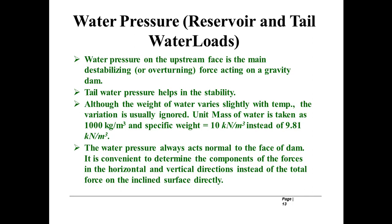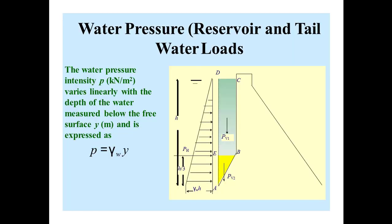The water pressure always acts normal to the surface of the dam, meaning perpendicular to the dam. It is convenient to determine the components of forces in the horizontal and vertical directions instead of the total force on the inclined surface directly. The pressure intensity V varies linearly with the depth of water measured below the free surface y, and is expressed as V = γw × y.